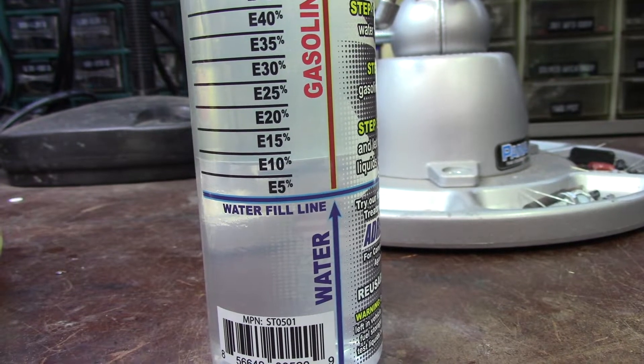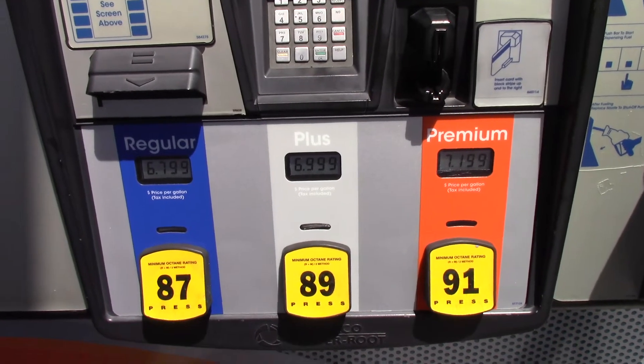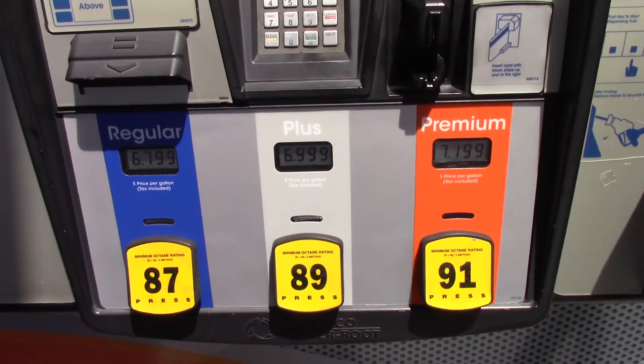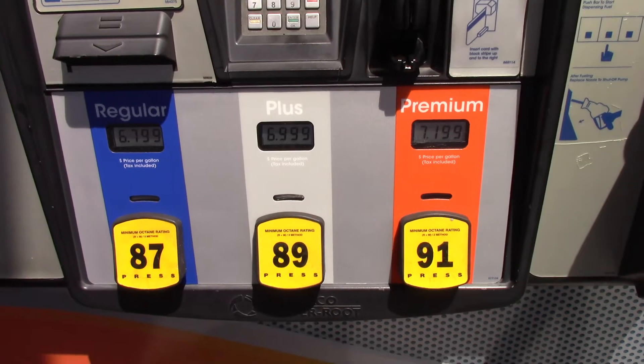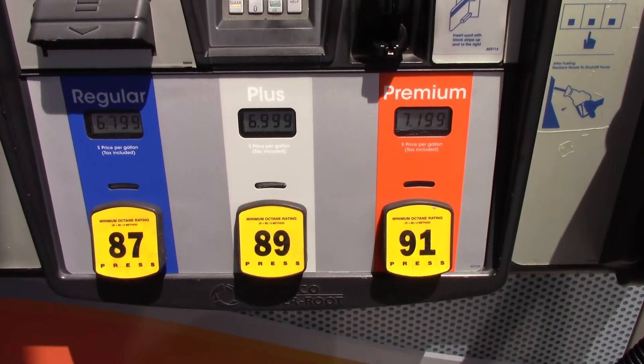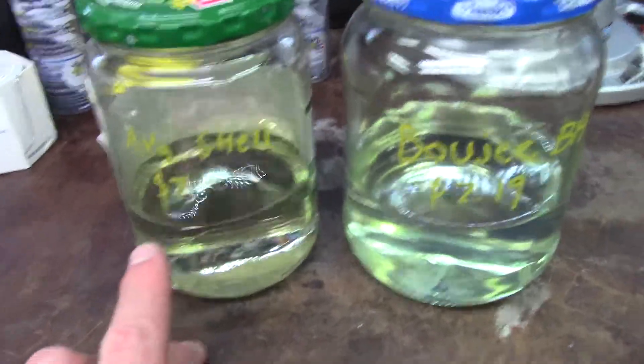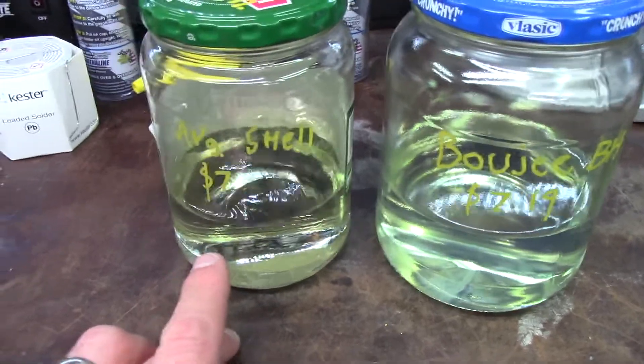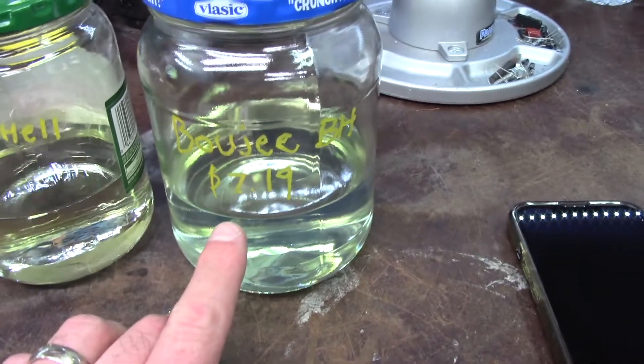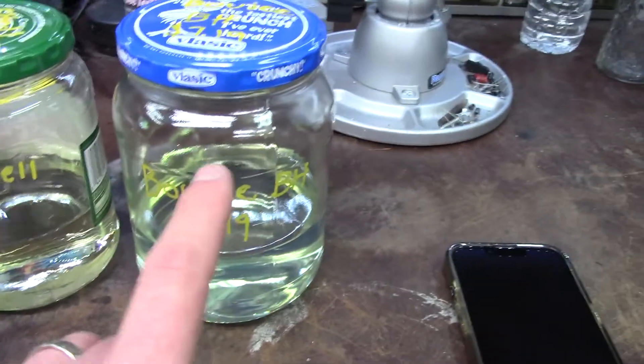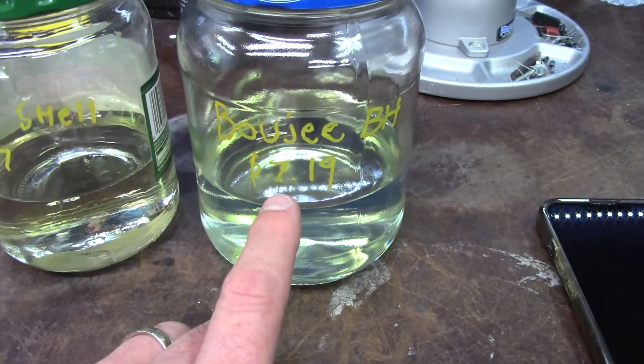I would have expected it to be a little bit higher these days. So far, this is identical to the discount station that we tested. Struggling to find an expensive station. This is Beverly Hills adjacent, $7.19 for premium. That's on the upper end of the scale. I actually drove to Beverly Hills and tried to find a higher priced fuel, and it was actually lower than here.